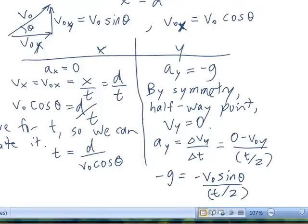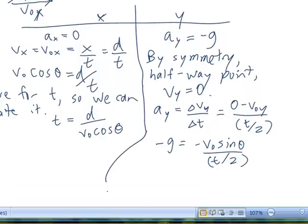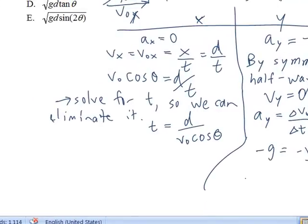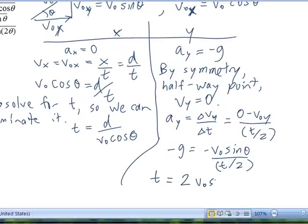We're going to solve for t so we can equate it over to the x side. And we're going to get t equals 2, because the negative signs on both sides cancel, V sub 0 sine of theta all divided by g.